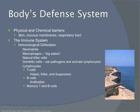Your body has a natural defense system of skin, membranes, and respiratory tract. Our immunological defenders are neutrophils, macrophages — which are the big eaters of disease — natural killer cells, dendritic cells, and lymphocytes, which include our T cells, B cells, and memory T and B cells to help fight disease again.